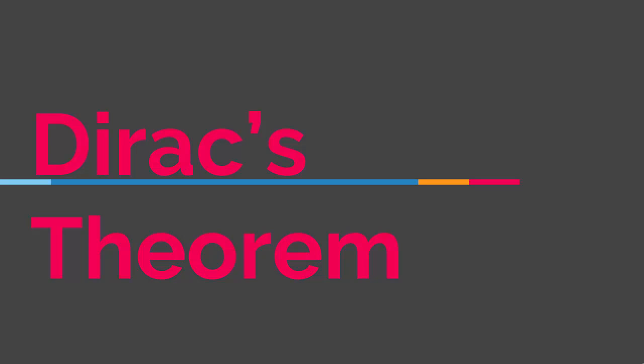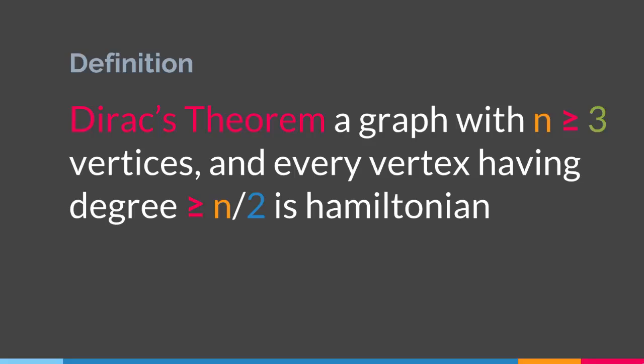Hello everyone. In this lecture we are going to talk about Dirac's theorem. Dirac's theorem, just like Ore's theorem, provides a sufficient condition for a graph to have a Hamiltonian circuit. Dirac's theorem says that a graph with n greater than 3 vertices and every vertex having degree greater than half of the number of vertices is Hamiltonian.